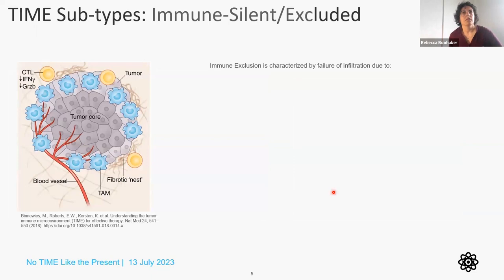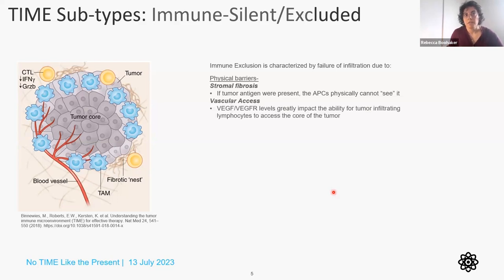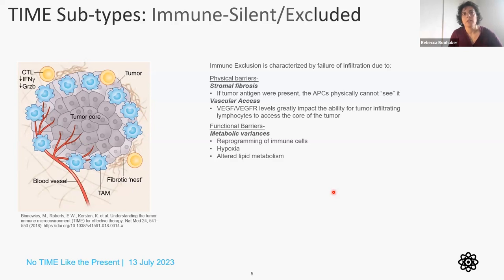There are three subtypes laid out in this manuscript. The first is the immune-excluded phenotype, characterized by a failure of infiltration due to physical barriers. Stromal fibrosis physically puts up a barrier — you can actually see the fibrotic nests in an H&E slide that prevent T cells from infiltrating into the tumor core, rendering many therapies ineffective. VEGF and VEGF receptor also play a huge role, mainly by influencing angiogenesis to the tumor. We have a program right now in HIF2-alpha and clear cell renal cancer that is highly dependent on this metabolic variance.